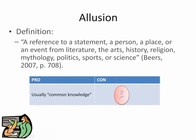Let's take a look at a comprehensive definition of allusion. An allusion is a reference to a statement, a person, a place, or an event from literature, the arts, history, religion, mythology, politics, sports, or science. On the pro side, an allusion usually refers to something that is common knowledge. On the con side, if it doesn't, then readers can end up confused or can miss the reference altogether.